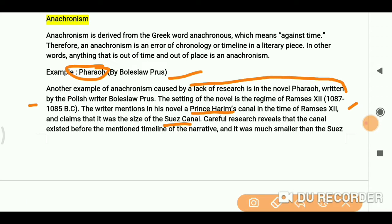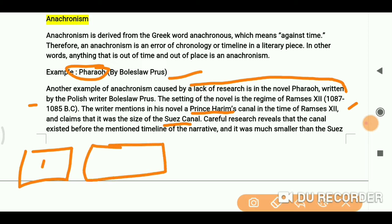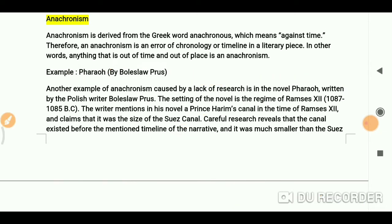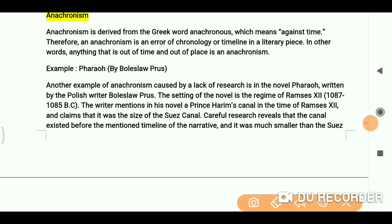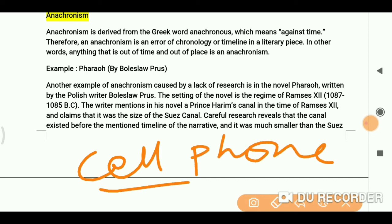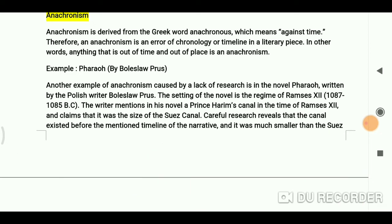To understand this: a writer writes a work in today's time, but the work is set in another time. For example, if a character in an ancient setting was described as using a cell phone, that chronology or timeline error is anachronism — you can see anachronism here.